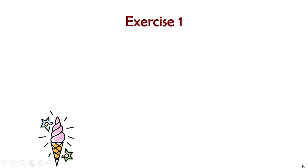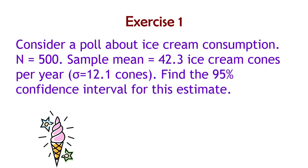So exercise number one. Consider a poll about ice cream consumption, sample size of 500 individuals, and what they're measuring is the number of ice cream cones per year. The mean number of ice cream cones per year is 42.3 here. The standard deviation, which we know for some reason, is 12.1. Find the 95% confidence interval for this estimate.